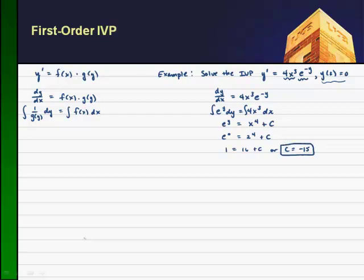So if I go and pull this equation back, I get E to the Y equals X to the 4th plus this minus 15 for C. Now, if I wanted to solve this and get an explicit value for Y, I'll take the natural log of both sides. I'll take the natural log of the left-hand side and get my function Y of X. And if I take the natural log of the right-hand side, I get the natural log of X to the 4th minus 15.